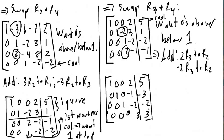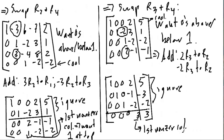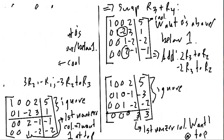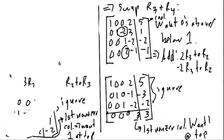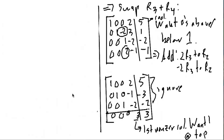Now we've got leading 1s in the first three rows with zeros above and below, so we can ignore those and just focus on the last row. I want every row to have 1 as the first entry, so I need to turn this 3 into a 1. There's no swapping to be done — the only thing for me to do is divide. I can divide the bottom row 4 by 3.